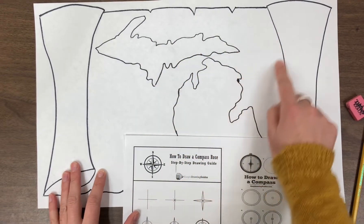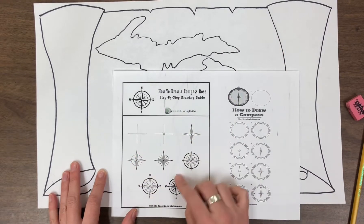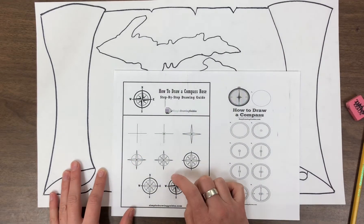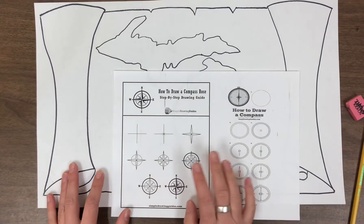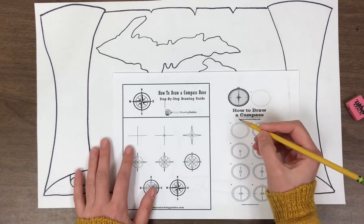So we're going to draw our little rose compass right here. This is a rose compass. It shows the four cardinal directions or it can show the eight intermediate directions. It's kind of up to you.